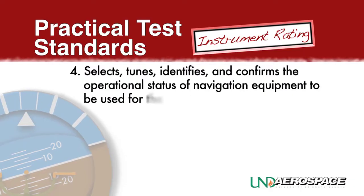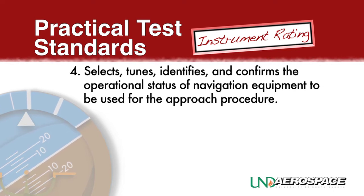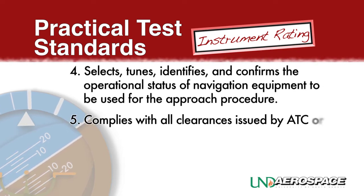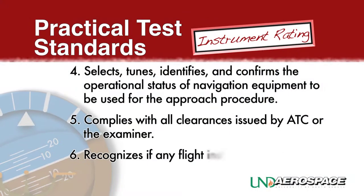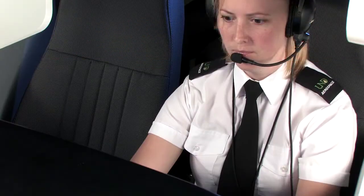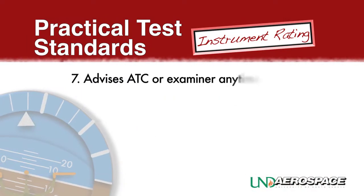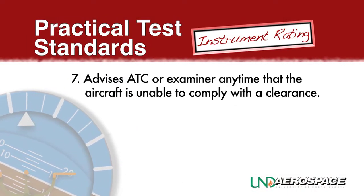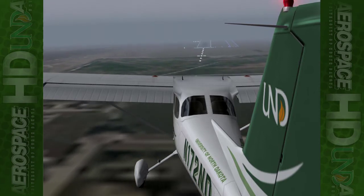The applicant selects, tunes, identifies, and confirms the operational status of navigation equipment to be used for the approach procedure. Complies with all clearances issued by ATC or the examiner. Recognizes if any flight instrumentation is inaccurate or inoperative and takes appropriate action. Advises ATC or examiner any time that the aircraft is unable to comply with a clearance. Establishes the appropriate aircraft configuration and airspeed considering turbulence and wind shear, and completes the aircraft checklist items appropriate to the phase of flight.